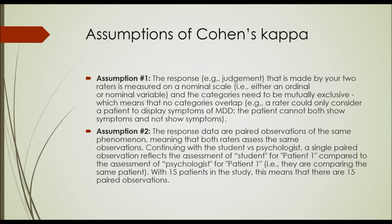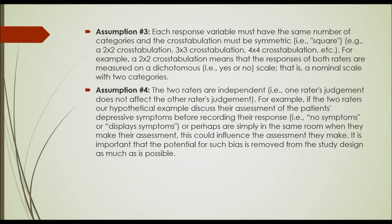With 15 patients in the study, this means there are 15 paired observations. The third assumption is that each response variable must have the same number of categories, and the cross-tabulation must be symmetric, i.e. square — for example, a 2×2, 3×3, or 4×4 cross-tabulation. In a 2×2, the responses of both raters are measured on a dichotomous (yes or no) scale, that is, a nominal scale with two categories.